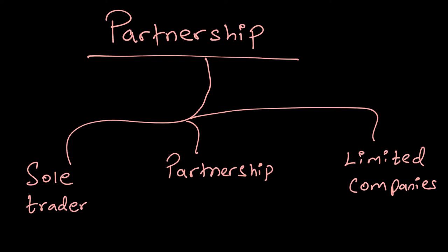After covering limited companies, we now move to the next topic: partnerships. Keep the spectrum in mind — on one hand we had a sole trader, a single entity running the business and taking all the profits. Then we looked at limited companies, where a company issues shares and can have hundreds or thousands of owners in the form of shareholders. We now move to the next entity, which is called a partnership.